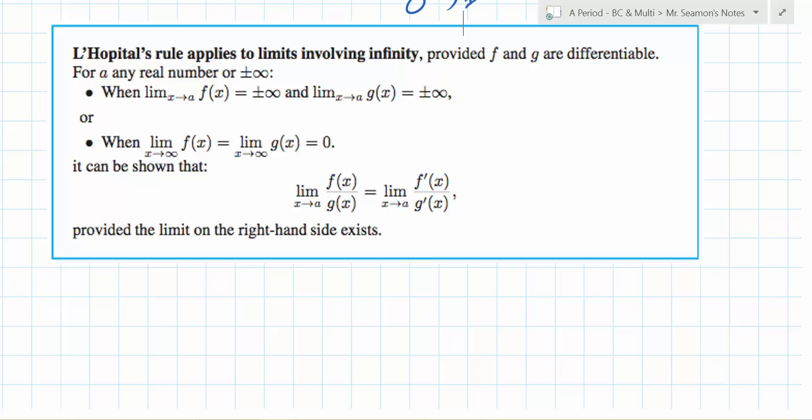The second way is the indeterminate form can be hidden. We've seen these a little bit. Meaning, it's not necessarily a quotient to begin with, but you can do what? You can turn it into a quotient by doing some clever manipulation.